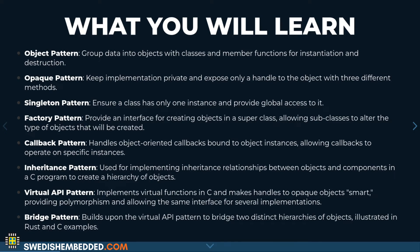Then we're going to look at the callback pattern, which is useful in every instance where you need to create a callback from one place to another in your application. We'll look at how to do this cleanly without using generic pointers like void pointers. We'll also look at how to pass the current context to the callback, so you can get an object-oriented callback delivered to specific instances of an object without passing a void pointer.